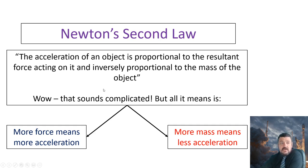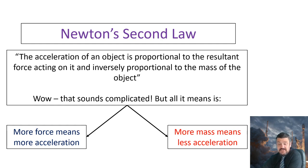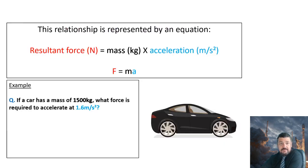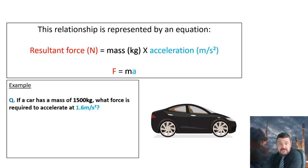So now we're going to look at Newton's second law. This states that the acceleration of an object is proportional to the resultant force acting on it and inversely proportional to the mass of the object. But let's break it down — all it really means is: more force means more acceleration, and more mass means less acceleration. As it's physics we have an equation. The relationship is: force in Newtons equals mass in kilograms times acceleration in metres per second squared. The shorthand is F equals MA.